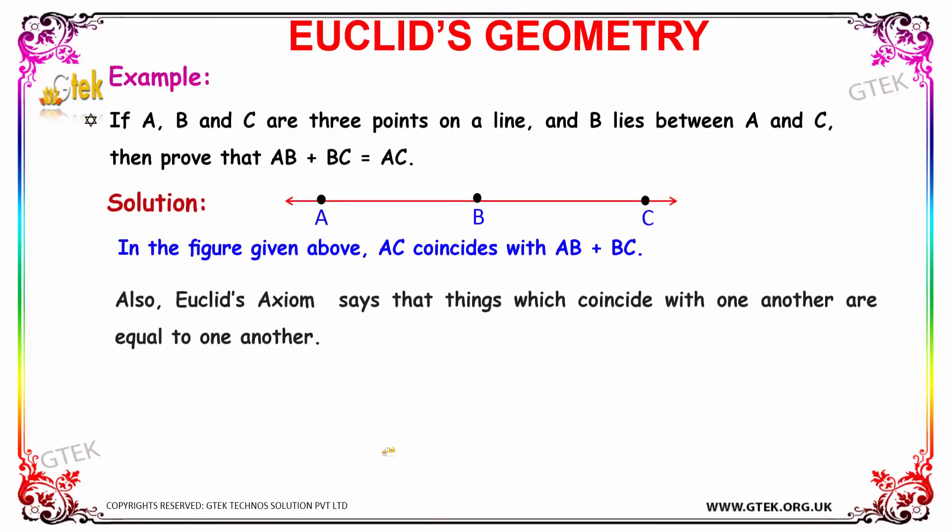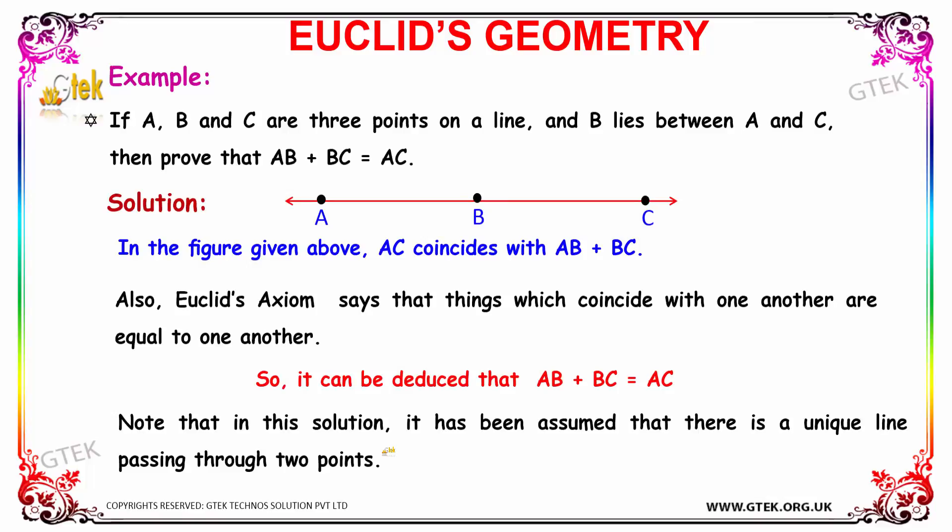Let's have an example in terms of Euclid's geometry. If A, B, C are three points on a line and B lies between A and C, then we have to prove that AB plus BC equals AC.